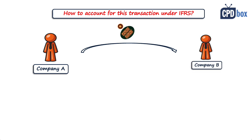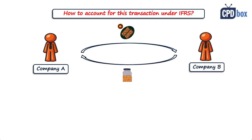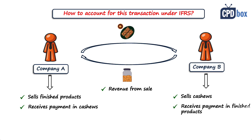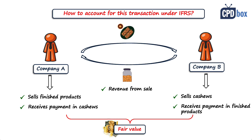How to account for this transaction? Both companies simply recognize revenue from the sale of their products. The food producer sells finished products and receives payment with cashews. The agricultural company sells cashews and receives payment with finished products. IFRS 15 specifies rules for non-cash consideration in paragraph 66, which prescribes measuring revenue at fair value. In this case, the fair values can be determined quite easily because they will be the normal selling prices for cash.